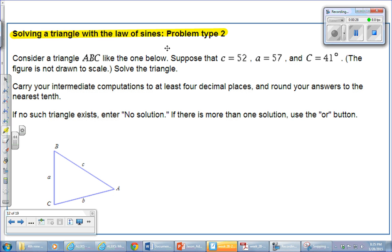So consider triangle ABC. They give you two sides, right? They give you c is this, a is this, and an angle, big C. Angle C is this. So they give you two sides and an angle. They tell you the figure is not drawn to scale, of course. The triangle is not a right triangle. That's why we're using law of sines. And there's a couple key bits of information here. Carry your intermediate computations to at least four decimal places. So that seems to be important. And then round to the nearest tenth.